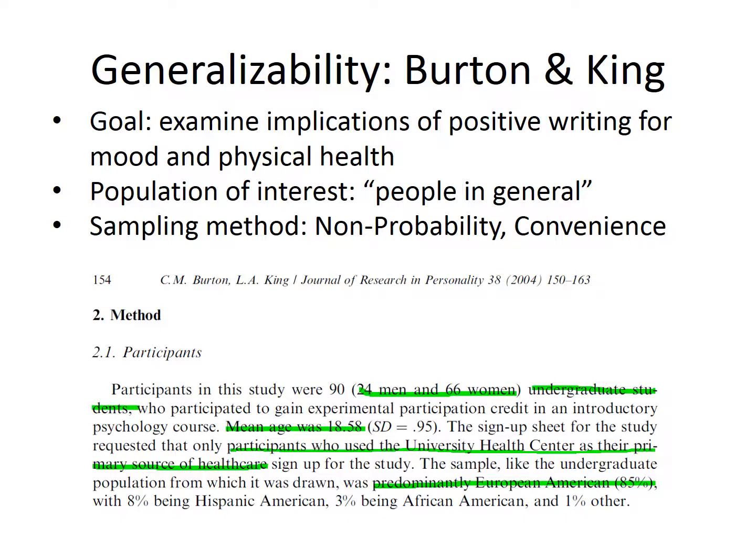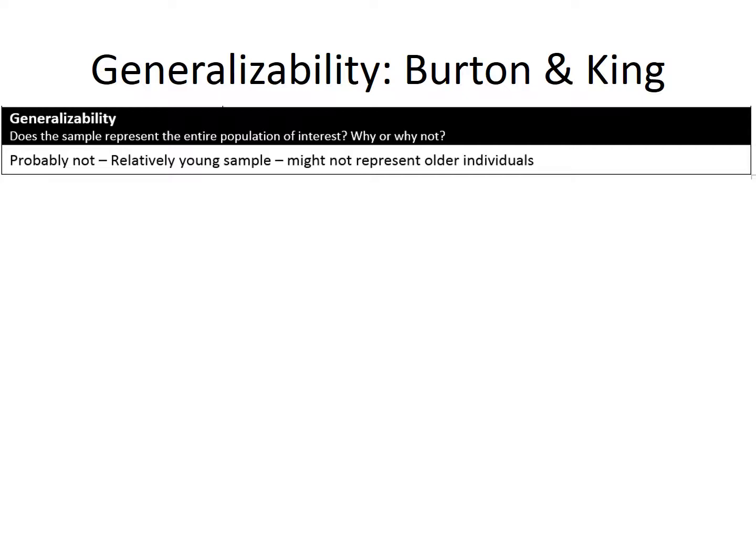They used a convenient sample of 90 students who use the Student Health Center for health care. The relatively young age of the sample might lead us to question whether the findings would represent older individuals. It's helpful to make a note about generalizability so you have a quick reference later.